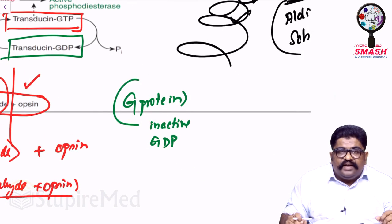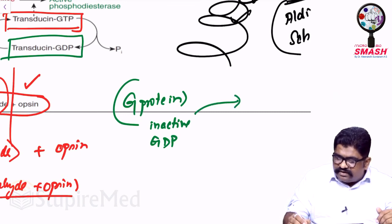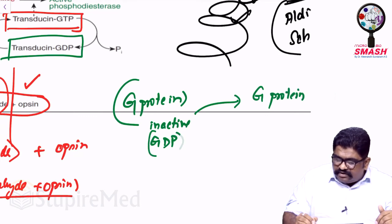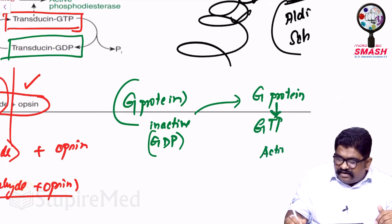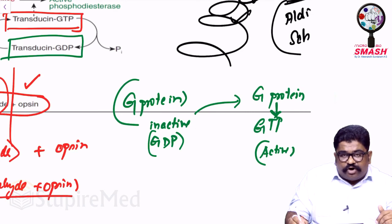Ask yourself, who is more energetic, GDP or GTP? It is GTP. So if you want to convert the inactive G protein into an active G protein, the only thing you have to do is convert the GDP into GTP.